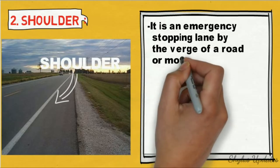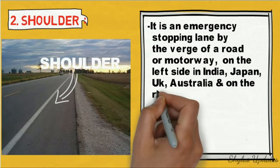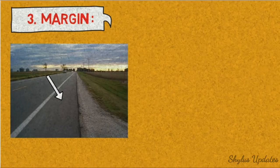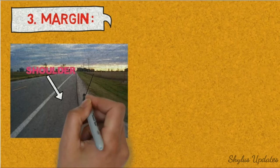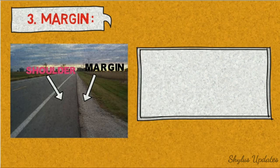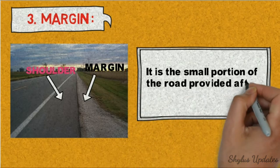Shoulder. It is an emergency stopping lane by the verge of a road or motorway, on the left side in India, Japan, UK, and Australia, and on the right in countries which drive on the right. It is also called hard shoulder. Margin is the small portion of the road provided after the shoulder.